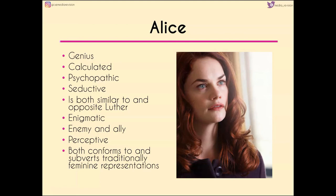This makes Alice both similar and opposite to Luther. Luther is also very calculated and perceptive and manipulates situations, but he does it for the greater good rather than for selfish reasons like Alice. She is very enigmatic — initially in this episode she is only an enemy, but in future episodes she becomes an ally to Luther. That shift is hinted at in their showdown on the bridge at the end, where Luther reveals he hasn't taken the evidence and doesn't need it to send her to jail.